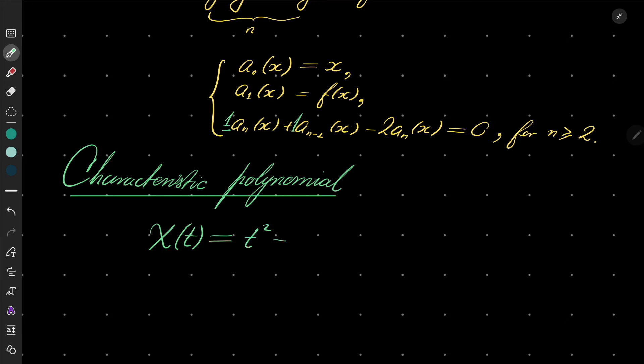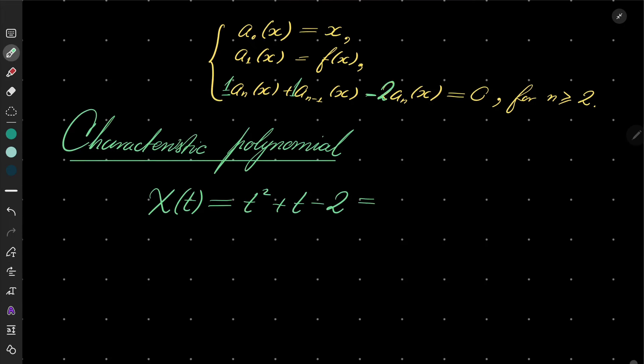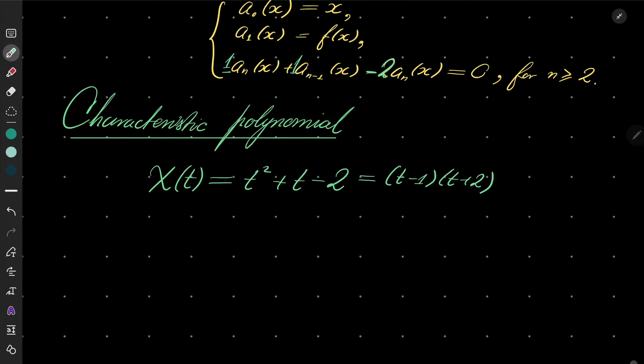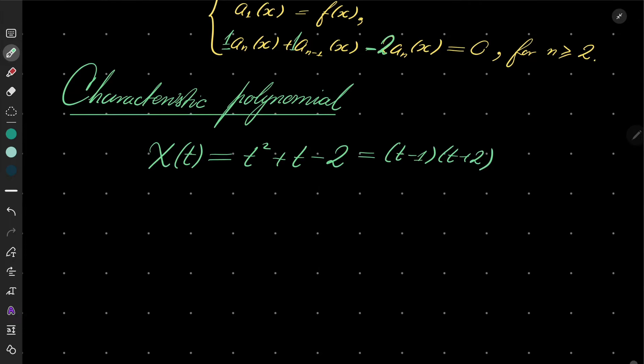Chi(t) equals... we take these numbers standing right here, 1 and 1, and put powers of t, so we have t^2 + t, and here we have -2.